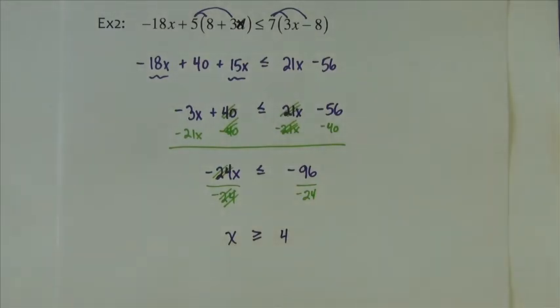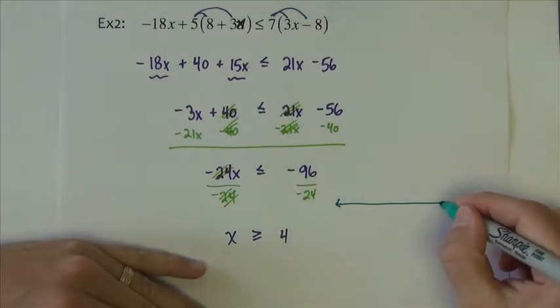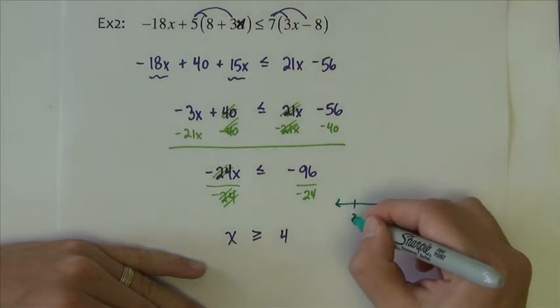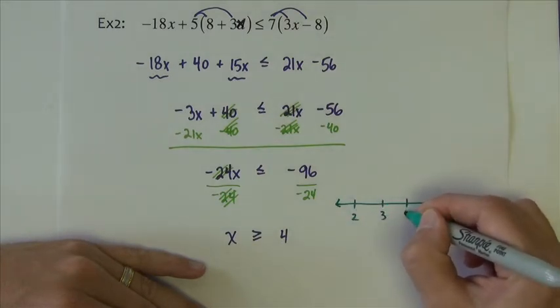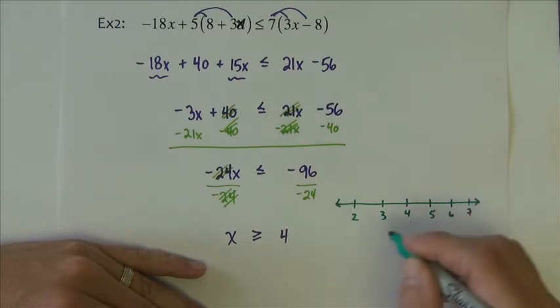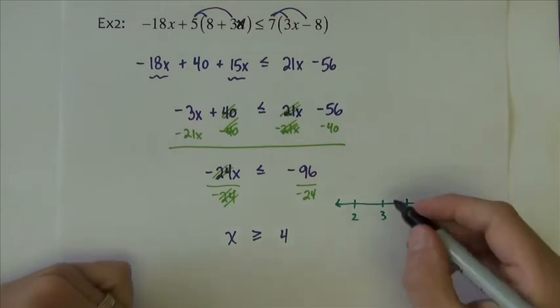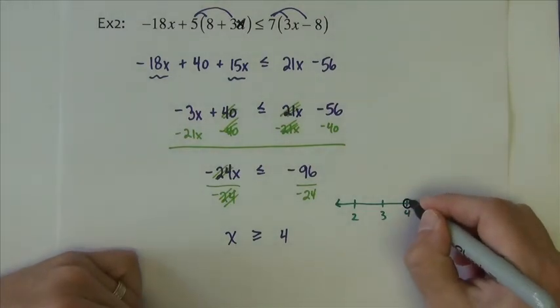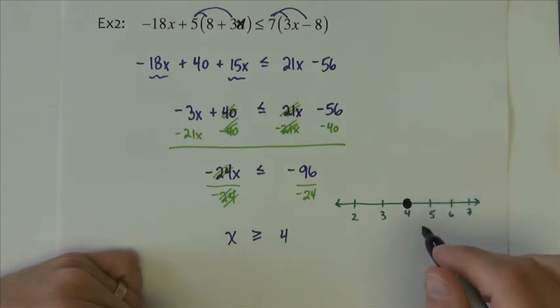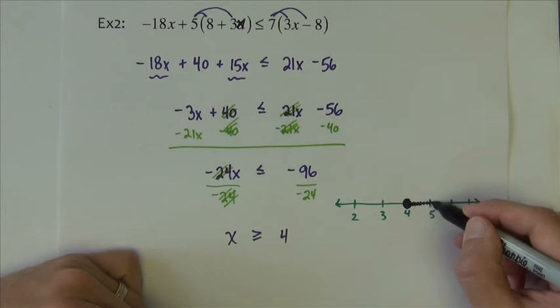Let's do this on a number line again. So I want all the numbers greater than or equal to 4. So I'm going to put a circle at 4. Because it's equal to, I'm going to fill in the circle. A filled in circle means that we can equal that number. Greater than side of 4 is everything to the right.